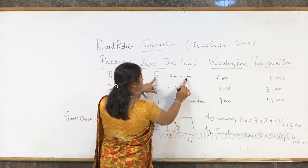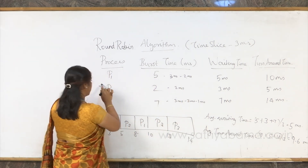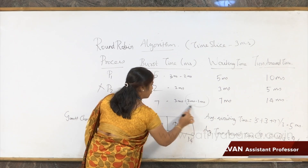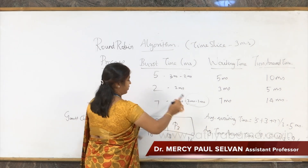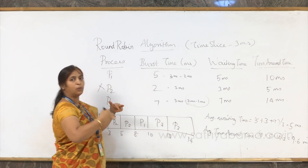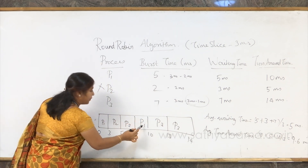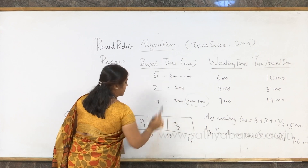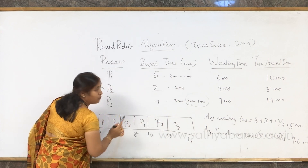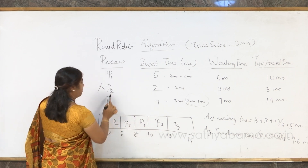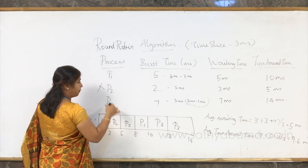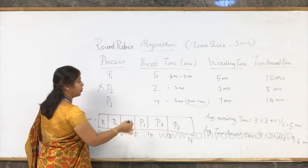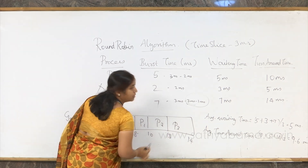After that rotation, P1 still has 2 milliseconds of pending burst time, so it gets the CPU again for 2 milliseconds. P2 is already done. Then P3 gets the CPU for another 3 milliseconds. After that, P3 still has 1 millisecond remaining, so P3 gets the CPU once more for 1 millisecond to complete.